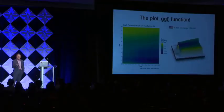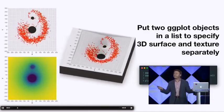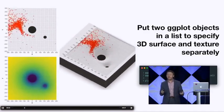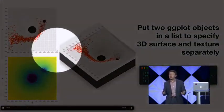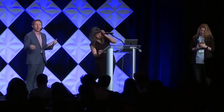You just pass in the ggplot object, drop in your ggplot, and watch it grow. Instead of passing in a single ggplot, we just pass in a list of two ggplots. So in summary, transform your ggplots into 3D ggplots with rayshader.